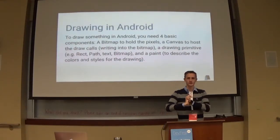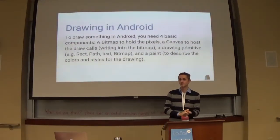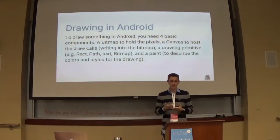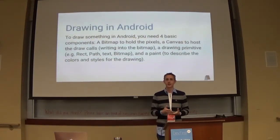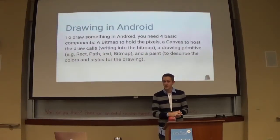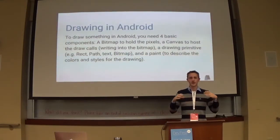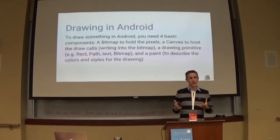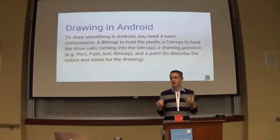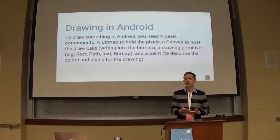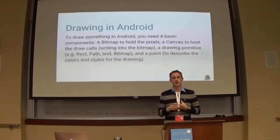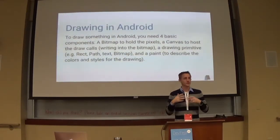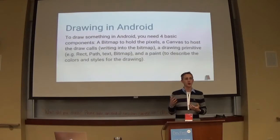To draw in Android, you need four basic components: a bitmap, a canvas, paint, and some sort of a primitive drawing like a rectangle or a circle. With the framework Google has set up for drawing watch faces, they've already given us a canvas to draw onto. So you can pretty much ignore the bitmap unless you want to draw images or bitmaps onto the face — they give you a canvas right off the bat.